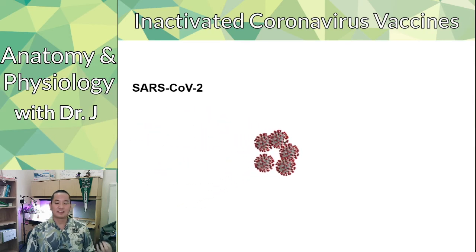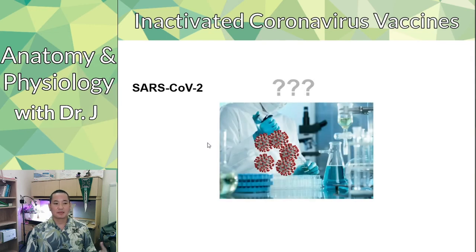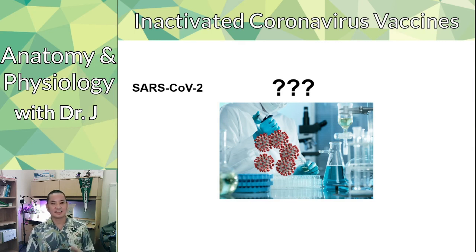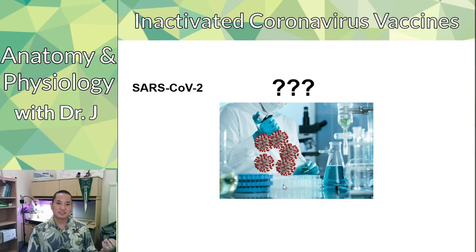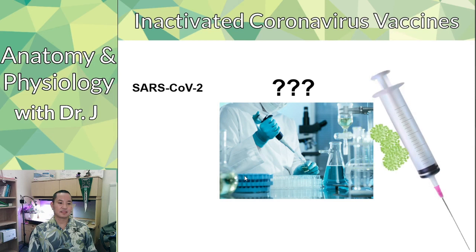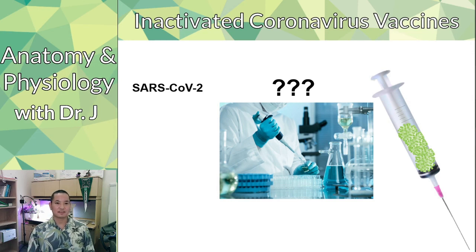You take the virus, grow it up in cell culture, collect large amounts of it, and chemically process it to inactivate it. There's a big difference in efficacy between the Chinese and Indian vaccines, which likely comes down to how they inactivate the virus and what else they include in the vaccine. The goal is to kill the virus so it doesn't replicate in the person being injected, then load the vaccine with that inactivated virus to train the immune system to recognize all the proteins and structures of the antigens on the virus.